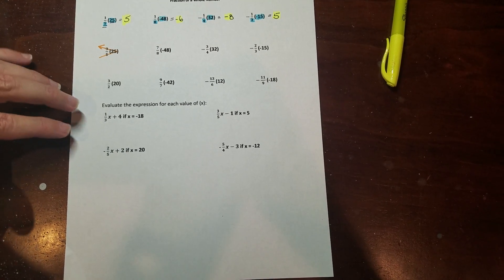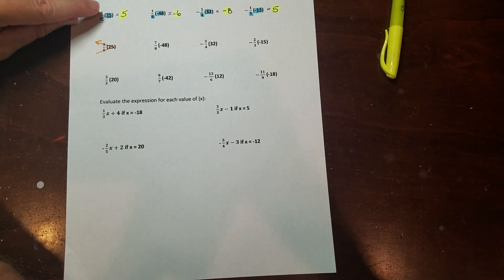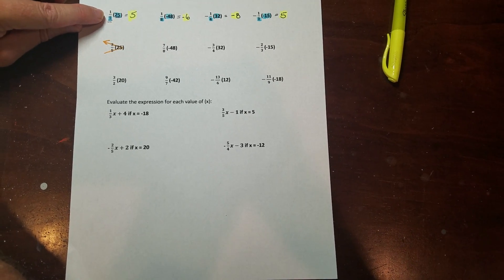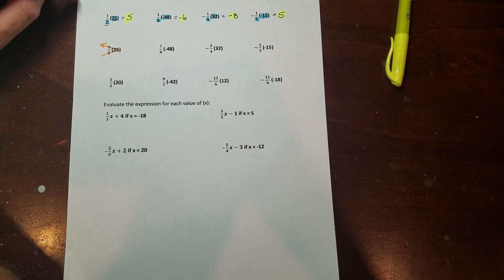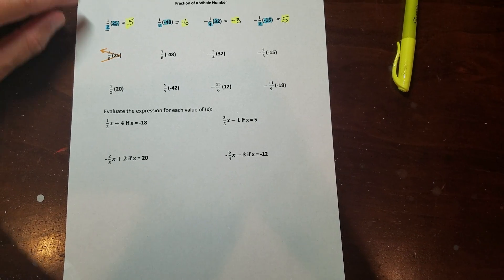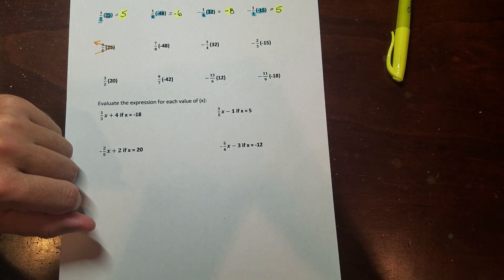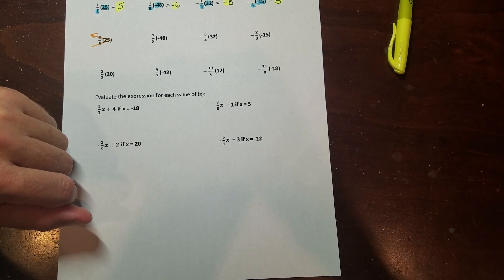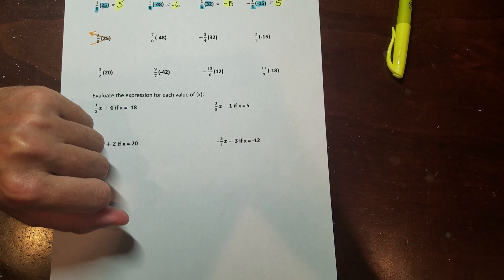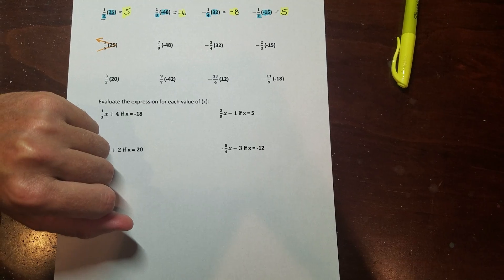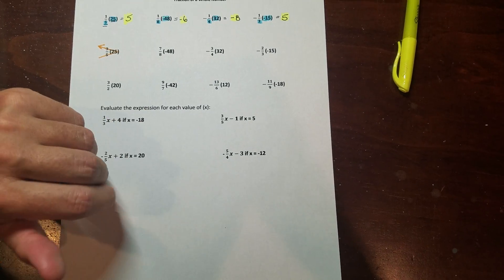It's pretty easy actually. So what you've got here is one-fifth times twenty-five. All you really do is you divide this number by the denominator of this fraction. So twenty-five divided by five is five. With the one-eighth, we got negative forty-eight divided by eight, which gives me a negative six. And then I have negative one-fourth times thirty-two, so four goes into thirty-two eight times. But this is a negative fraction, so that's going to become a negative eight is my answer. And then I have fifteen divided by three, which is five, but that's a negative times a negative, so that's a positive five.